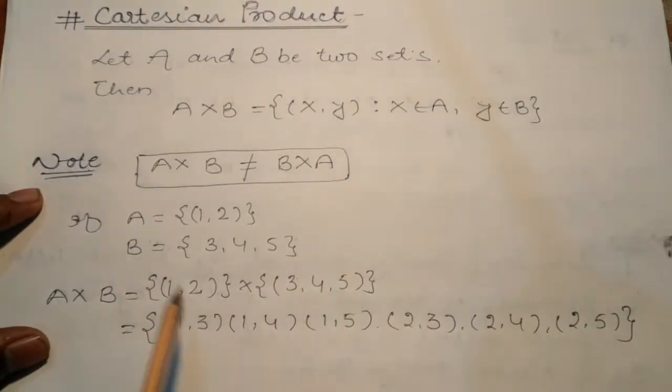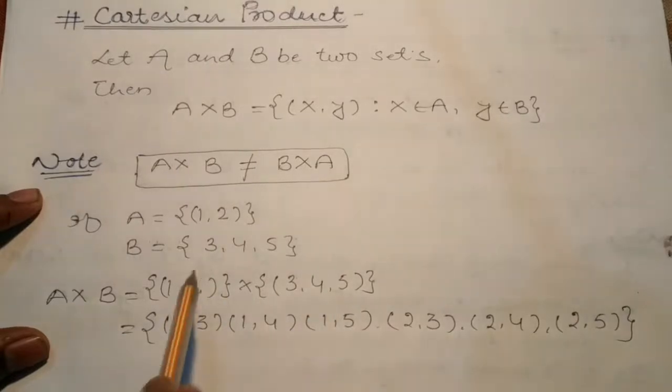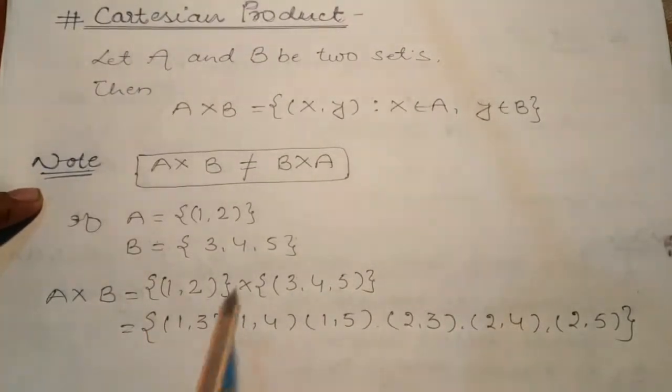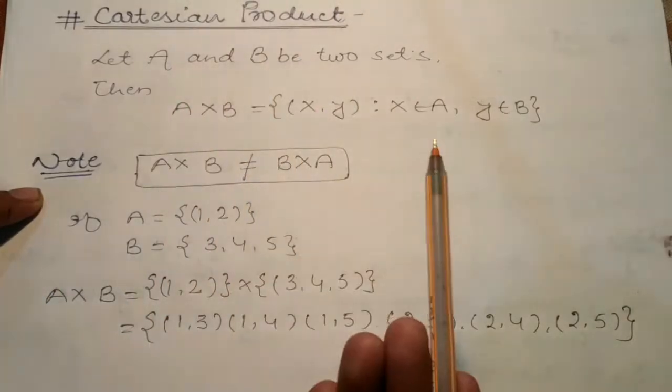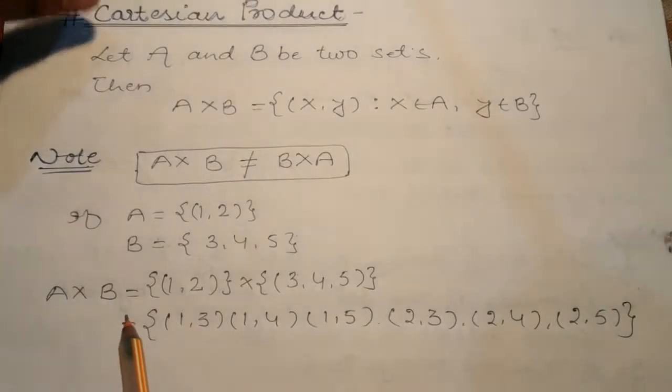Then you will have Cartesian product with the same values. Note that A×B is not equal to B×A. The variables come from the sets and these variables will be equal to the relationship.